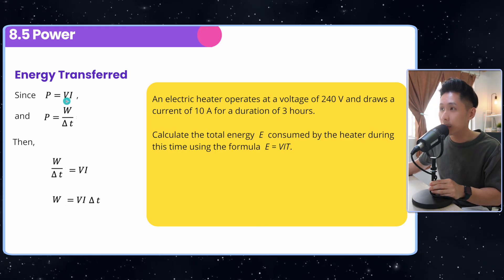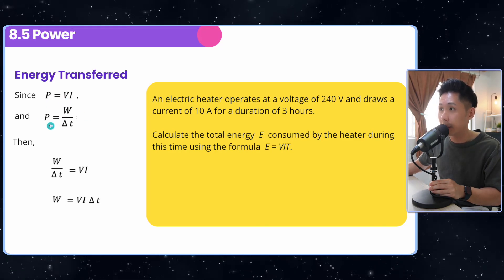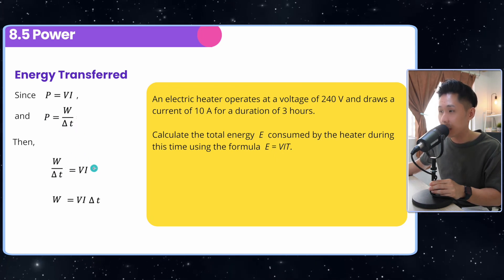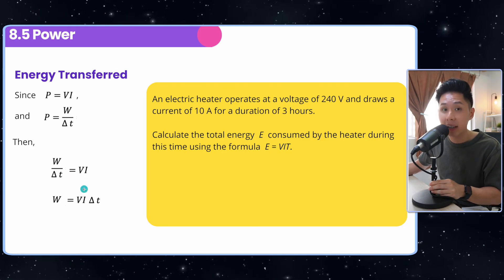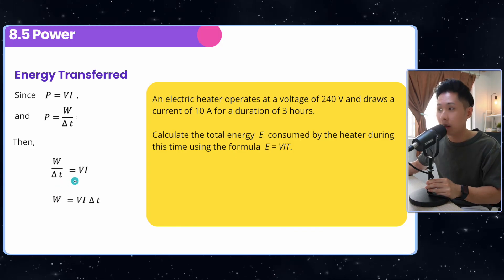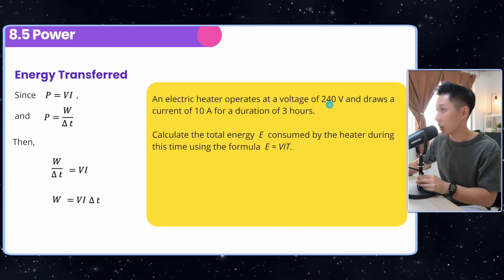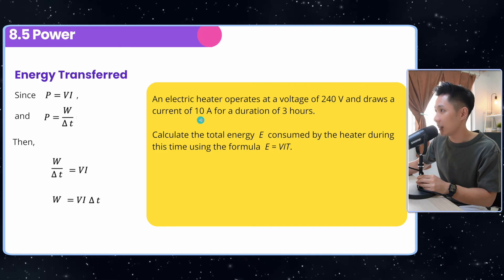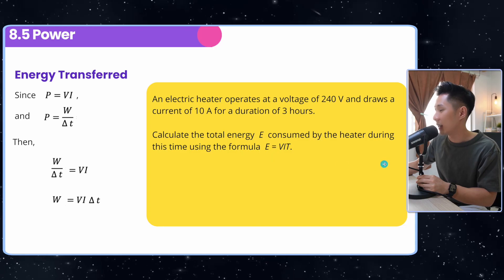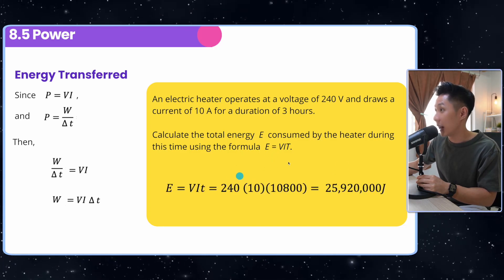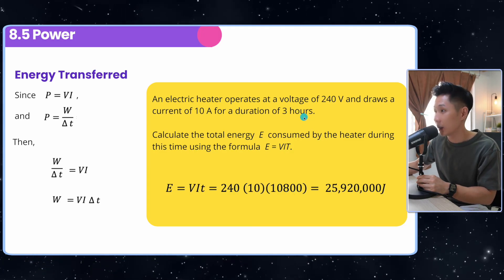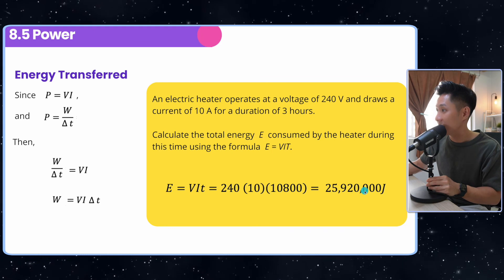So last slide of the day, energy transfer. Because P is equal to VI, and we also learned in chapter 5 that P is equal to work done divided by time. So technically, we can let them equal to each other. And then work done will be equal to VI versus the change of time. So energy can be calculated using VIT. So I have a question here, the voltage is 240 ampere is 10 for 3 hours. Calculate the total energy consumed by the heater. So I can calculate by substituting all the value that I have, VIT. I do have to convert this into second because that's the SI unit. And then you will have gotten the final answer.